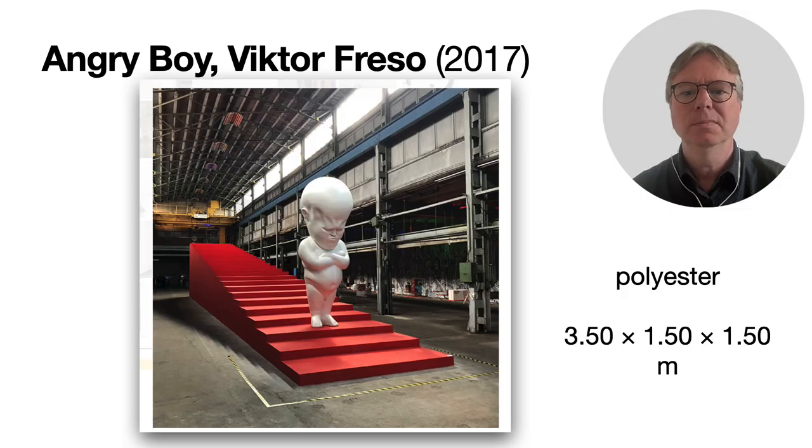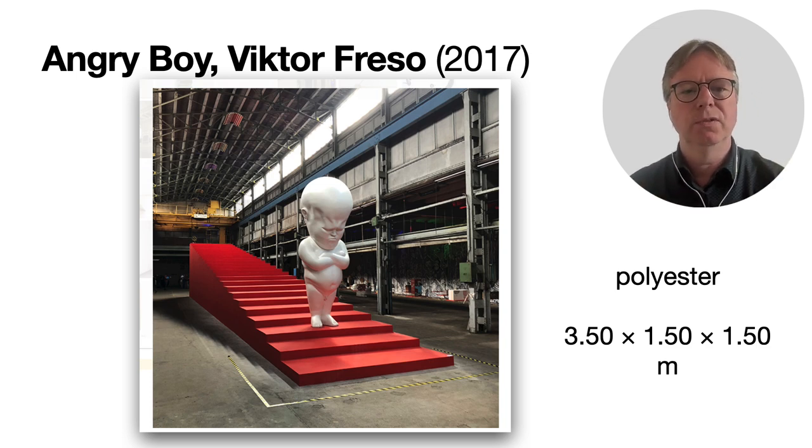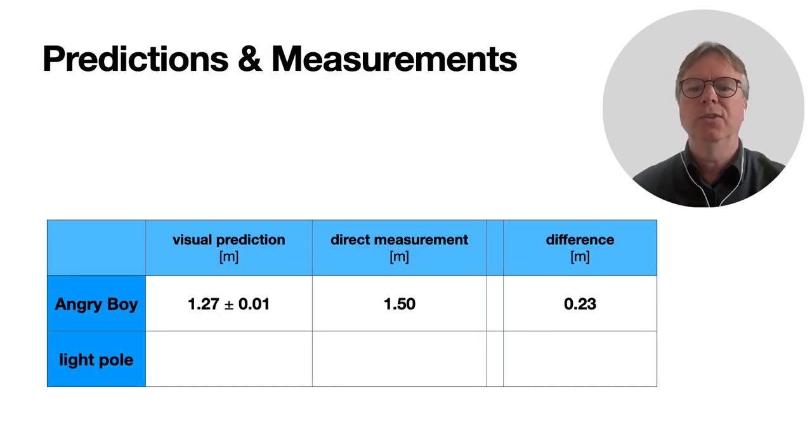I want to estimate, I'm going to assume that his head is a sphere and I want to estimate the radius of that sphere. Angry Boy is made by artist Victor Frazo in 2017. I looked at his website and he has some measurements. The height of the statue is three and a half meters, and the width and depth is one and a half meters. It's a bit tricky of course. You can see that his head is not entirely spherical and maybe his shoulders are a little bit broader than his head, but I'm going to stick to the one and a half meters for now as an estimate.